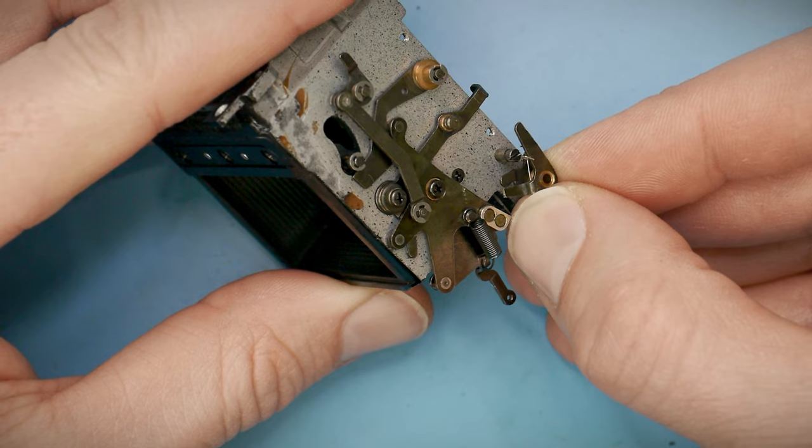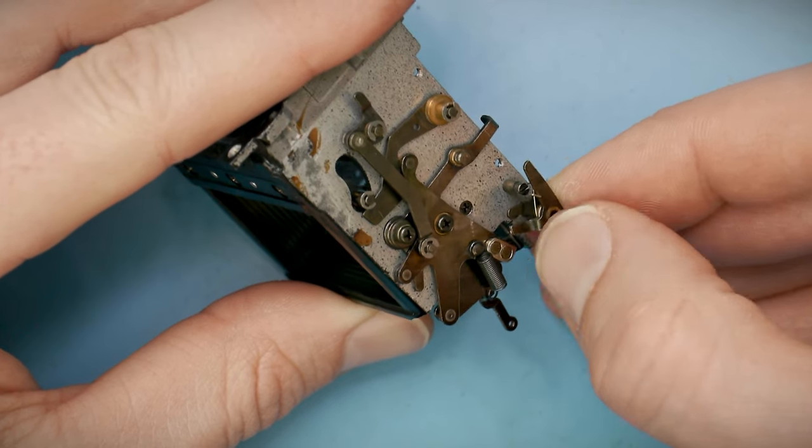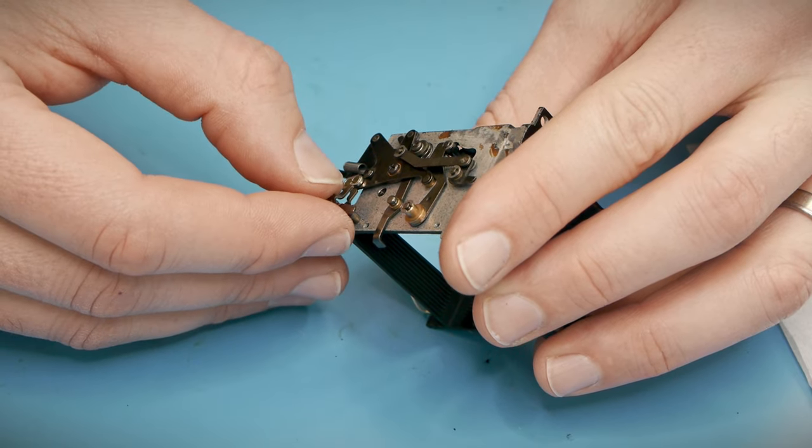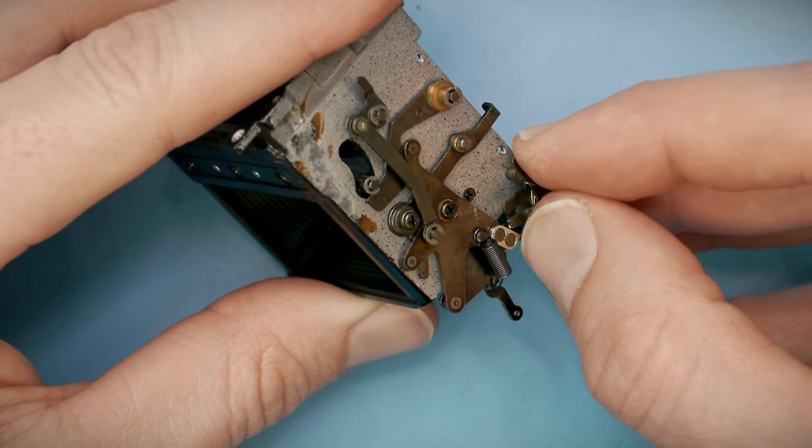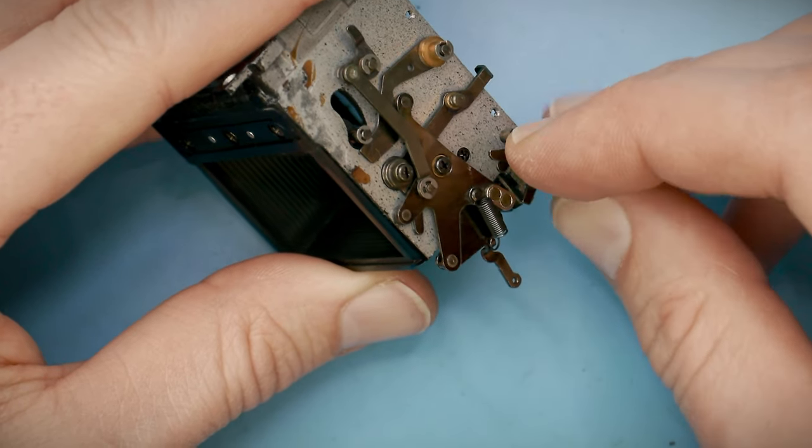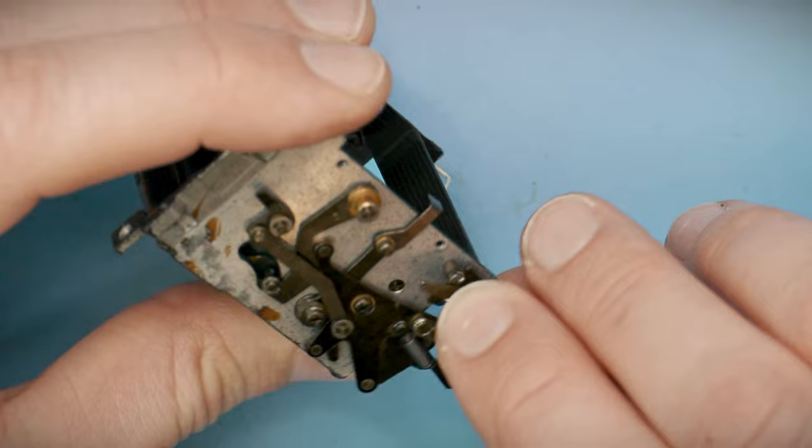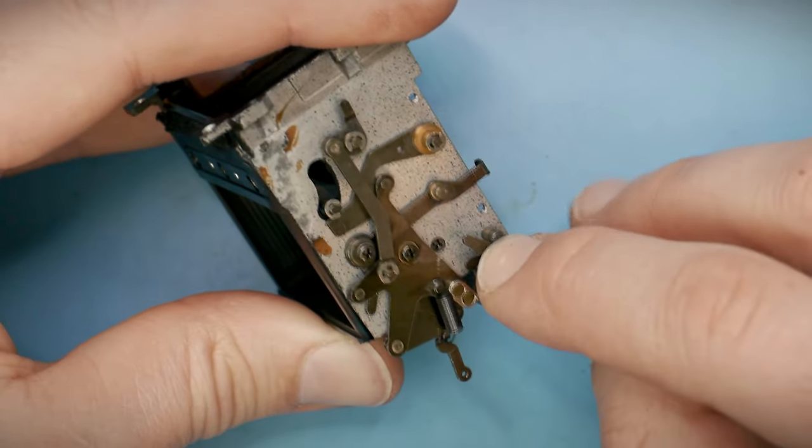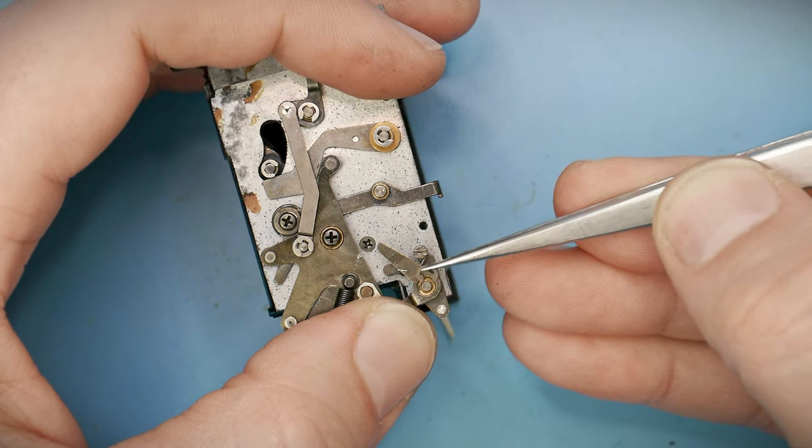In this case, if the mirror latch gets stuck, it would no longer hold the mirror down when you wind the camera. It would flip right up into the taking position. And it would also trip the opening curtain latch prematurely. At the very least, you wouldn't be able to see through the viewfinder to frame a shot. And at worst, the shutter mechanism might become mistimed and completely jam the camera. So it's really important to make sure all these bits are running smoothly.